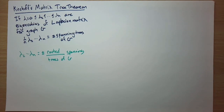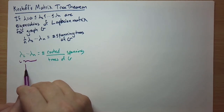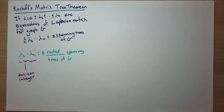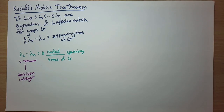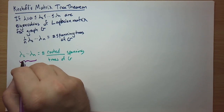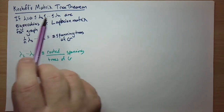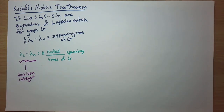One thing that is not immediately obvious is that this product must be an integer — the product of the non-trivial eigenvalues has to be an integer. Eigenvalues can be messy; they tend to be algebraic numbers. Algebraic does not mean easy to work with, and eigenvalues can be very messy. Is there an easy way to see that this must be an integer, other than the fact that we know it counts something?